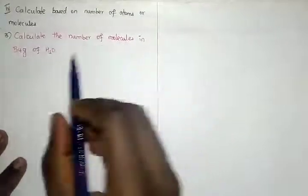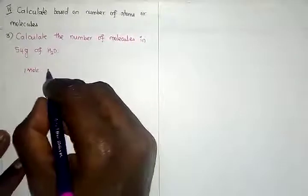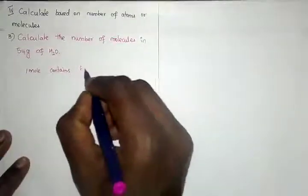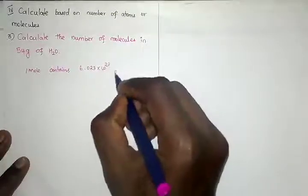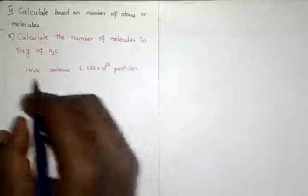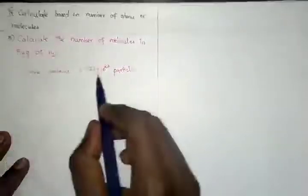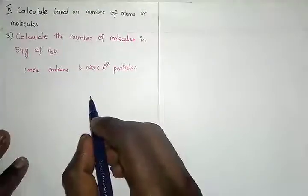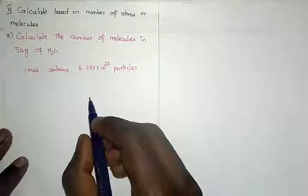We know very well that one mole of a substance contains 6.023 × 10²³ particles. So this mass we need to first convert into moles, and then we can convert into particles. First of all, what we need to do is calculate the number of moles.